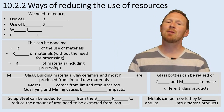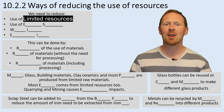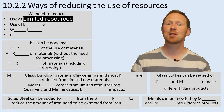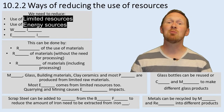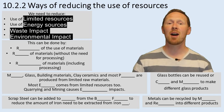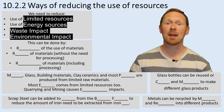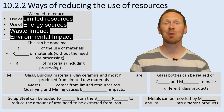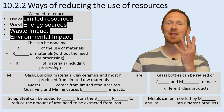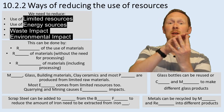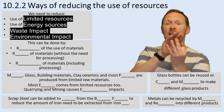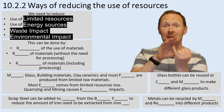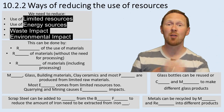We need to reduce the amount of limited resources that we have. We need to reduce the amount of energy sources that we use. We need to reduce the amount of waste and how that impacts the environment, and our environmental impact from extracting, quarrying, mining, and all of these things. So there are four areas we need to reduce: limited resources, energy sources, waste impact, and environmental impact.